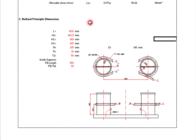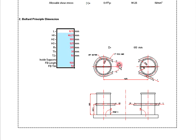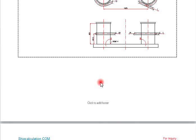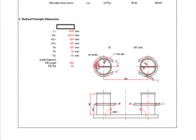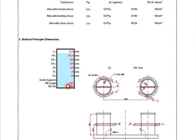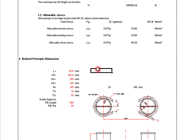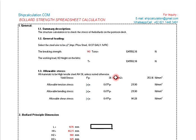This is the bollard principal dimension that you have to change. Whatever size you have, you just change it here and it will automatically update the formula. The red-colored text is what you need to change. But if you are an engineer, you might try to add something else also. This is just basic guidance for you to do the bollard strength calculation.